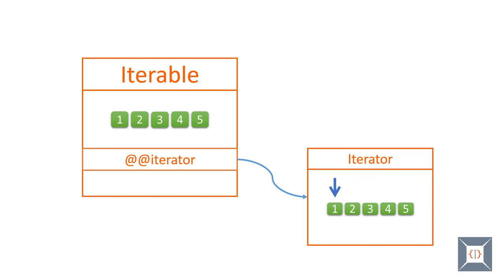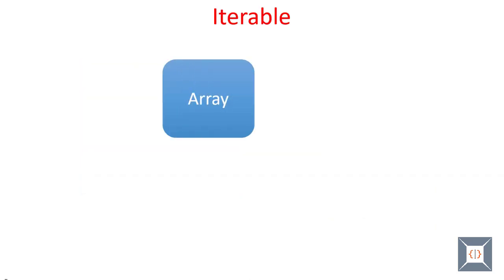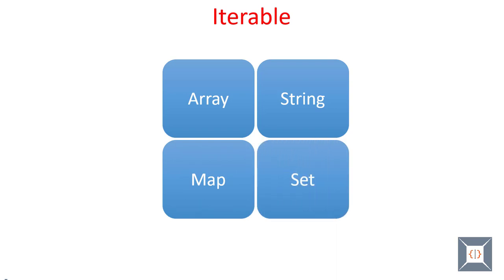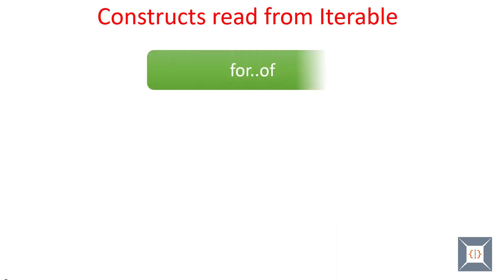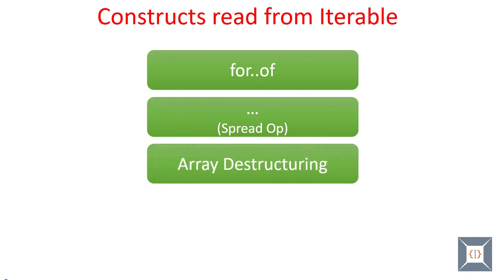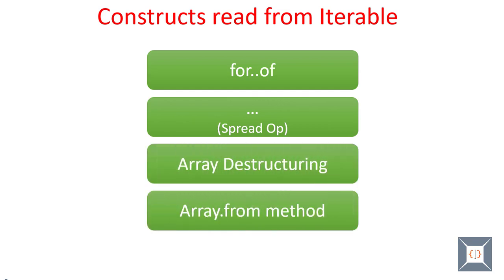Now let's look at some examples of Iterable. At the time of recording, Array, String, Map, and Set are Iterable types when targeting ES6. For...of is one of the constructs that knows how to consume data from an Iterable. Spread operator, array destructuring, and Array.from method are some of the other constructs that know how to get data from Iterables. When using one of these constructs to read data from an Iterable, it invokes the Iterator factory method to get an instance of the Iterator and uses it to get the values.